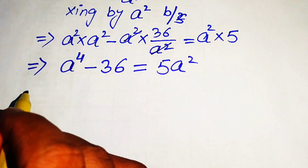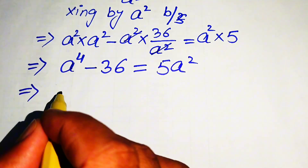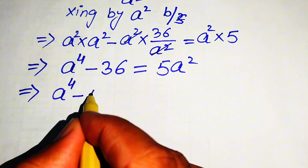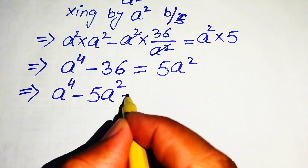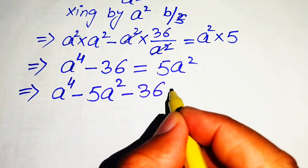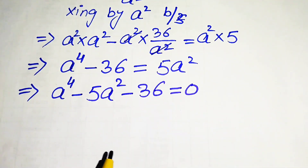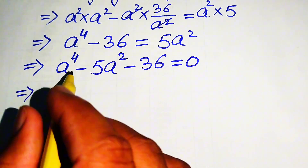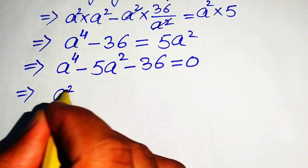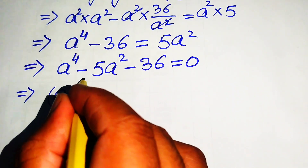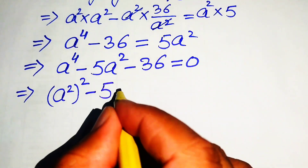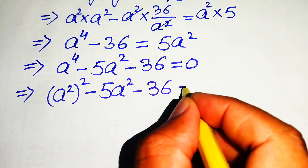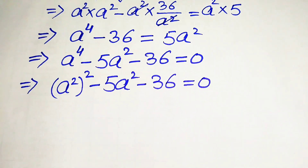We rearrange the equation by moving 5a² to the left-hand side, giving us a⁴ - 5a² - 36 = 0. We can rewrite a⁴ as (a²)², making this equation quadratic in the variable a².